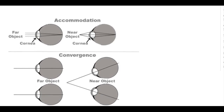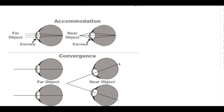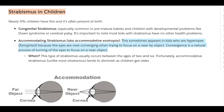In farsighted people, the light goes past the retina. The process of accommodation brings the light back to the retina so it hits correctly. Along with accommodation, convergence also turns the eyes inward to focus on a near object — hence it's called accommodative esotropia.